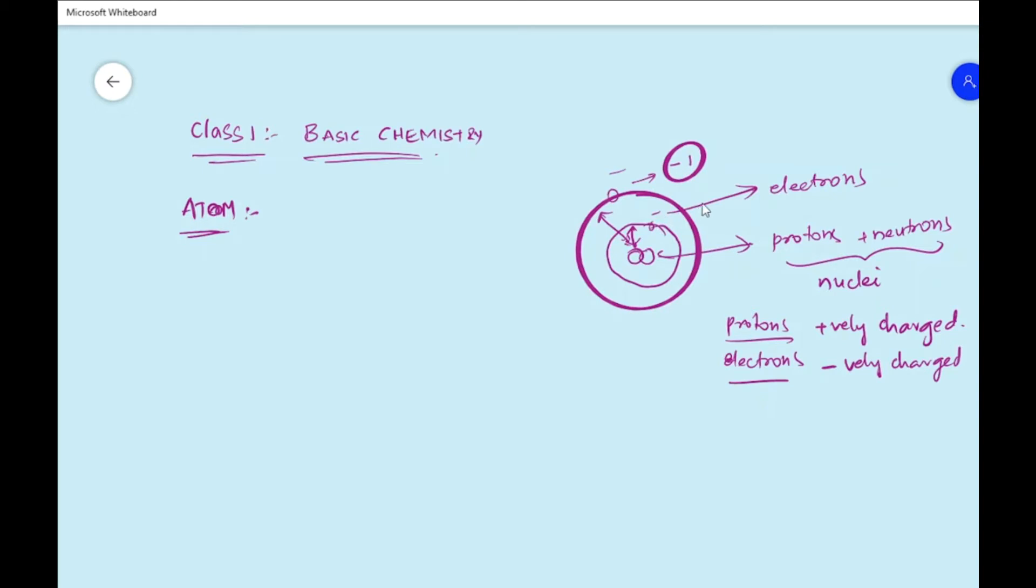So if we just look at our periodic table, we have all the elements listed out. Normally if you take any element, in this example we will take the hydrogen atom.